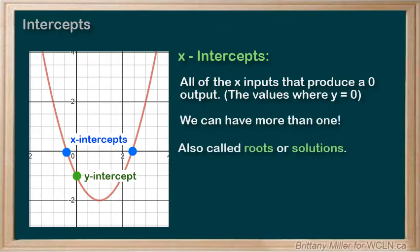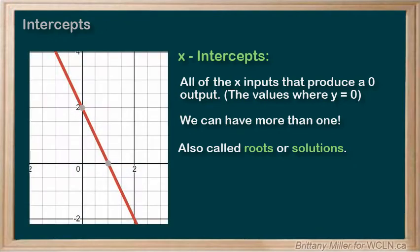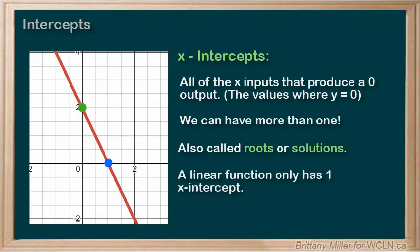Sometimes they are also called the roots or solutions of the function. Consider this line. It crosses the y-axis once and the x-axis once. We can't cross the x-axis twice with a line that doesn't bend. It's impossible.